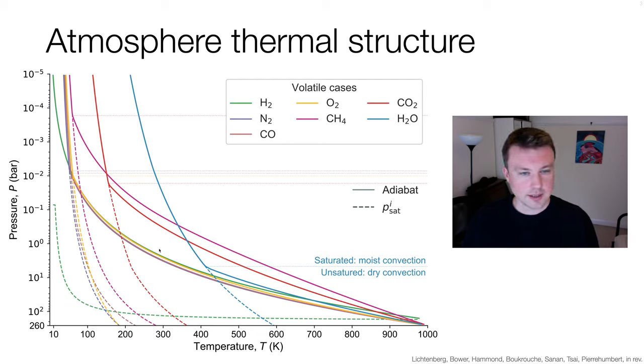The different lines here show different volatiles, assuming that these atmospheres are single species atmospheres composed only of, for example, hydrogen or water. The colors indicate the different volatiles, and the solid lines represent the temperature pressure structure for each single species atmosphere.